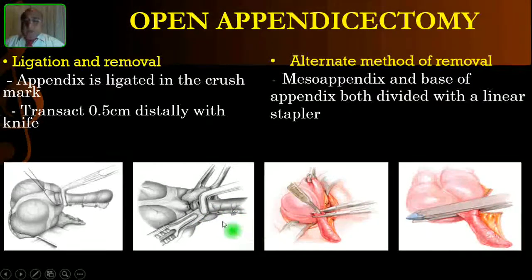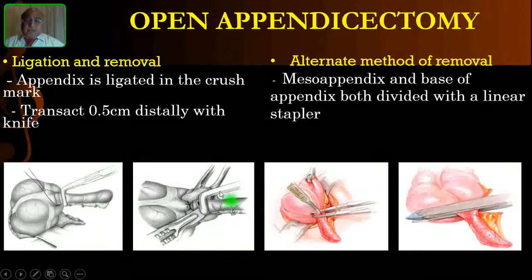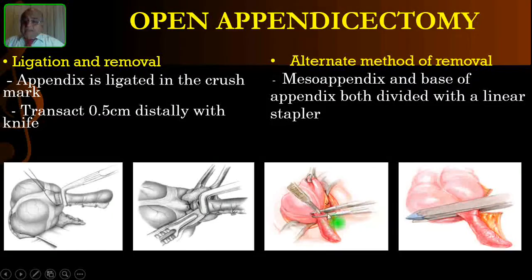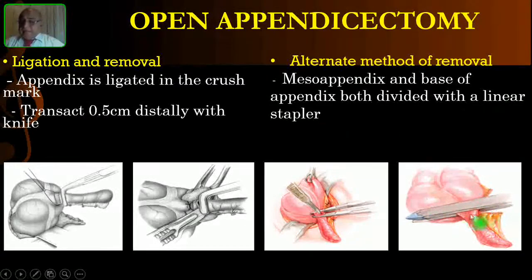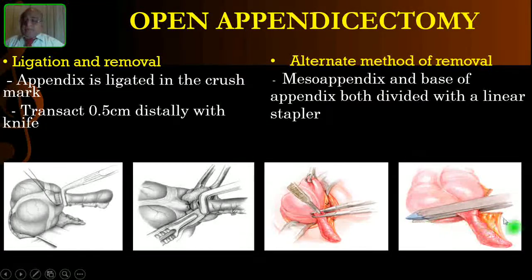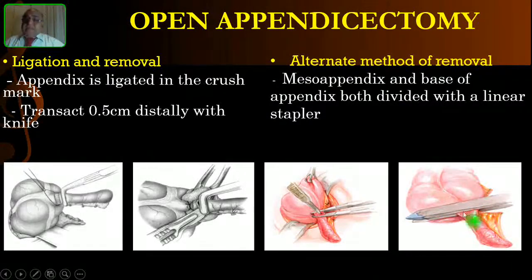As an alternate method, instead of a right-angle or straight artery forceps, you can use a linear stapler — a GIA stapler. This can be used not only in laparoscopic surgery but also in open surgery to divide both the mesoappendix and the base of the appendix.